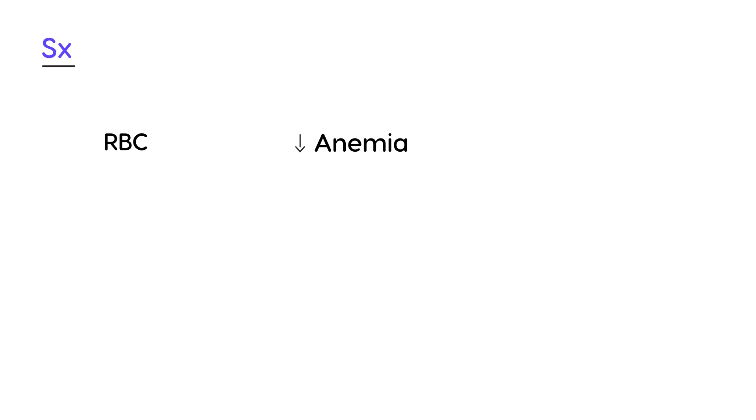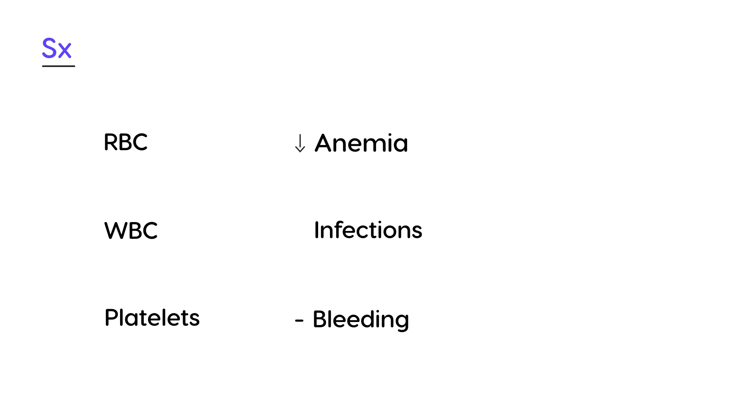Now let's talk about symptoms. Instead of just memorizing them, think about what happens: normal cells are not able to differentiate into red blood cells, white blood cells, or platelets. If you don't get red blood cells, you have anemia. If you don't get white blood cells, you get infections. And if you don't get platelets, you get bleeding. All the symptoms in ALL stem from these three deficiencies.